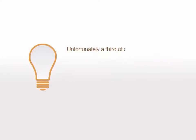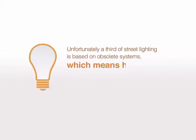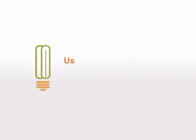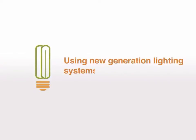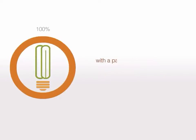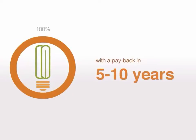Unfortunately, a third of street lighting is based on obsolete systems, which means high consumption and low efficiency. Using new generation lighting systems and technologies would allow energy consumption and costs to be reduced by about 85 percent, with a payback period of five to ten years.